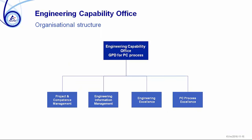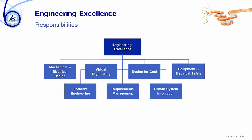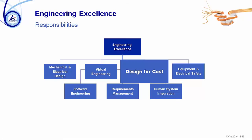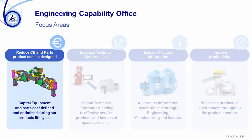Engineering excellence is focusing today on seven different capabilities — these are the ones in focus at this point in time. Of course, you need many other capabilities to design in the right way; other capabilities are considered mature and not in focus for the time being. Design for cost is the newest capability, one and a half years old within Tetra Pak. The reason for bringing that capability into engineering excellence was that reducing capital equipment and parts product cost is an important area for us.